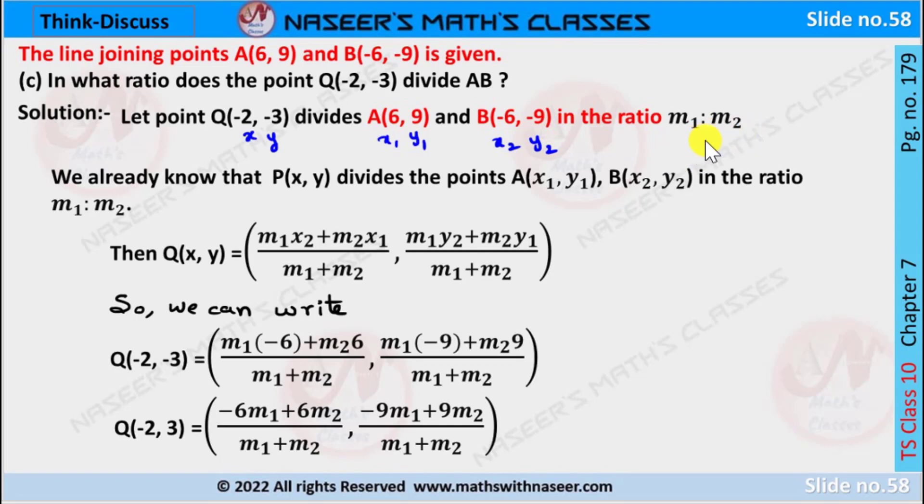We already know that if a point P(x,y) divides the points A(x₁,y₁) and B(x₂,y₂) in the ratio m₁:m₂, then we can write the section formula.